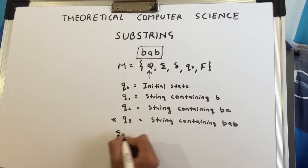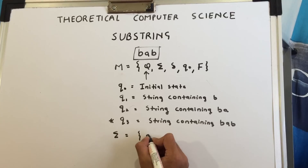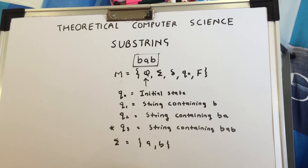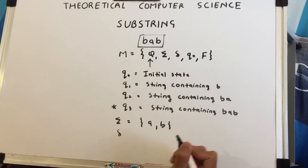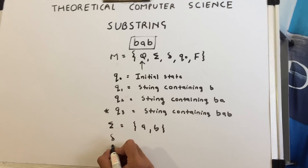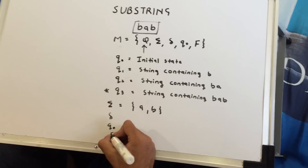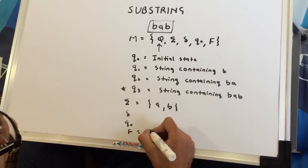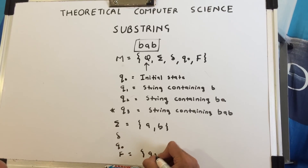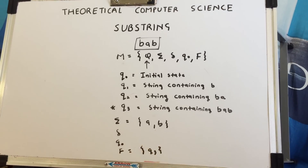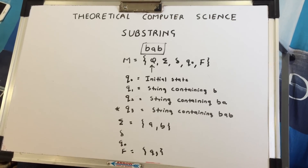Sigma — we know our sigma is going to be 'a' and 'b', that's our input alphabet. We know our q0 is the initial state, and our final state F is q3, which is the acceptance state. So this is our mathematical model.